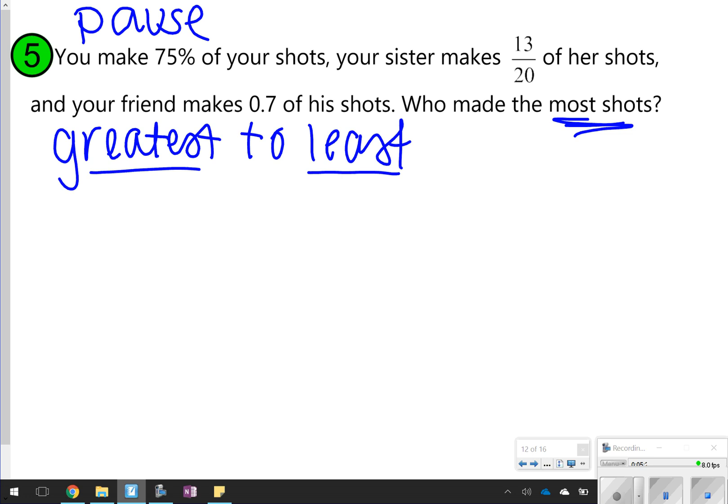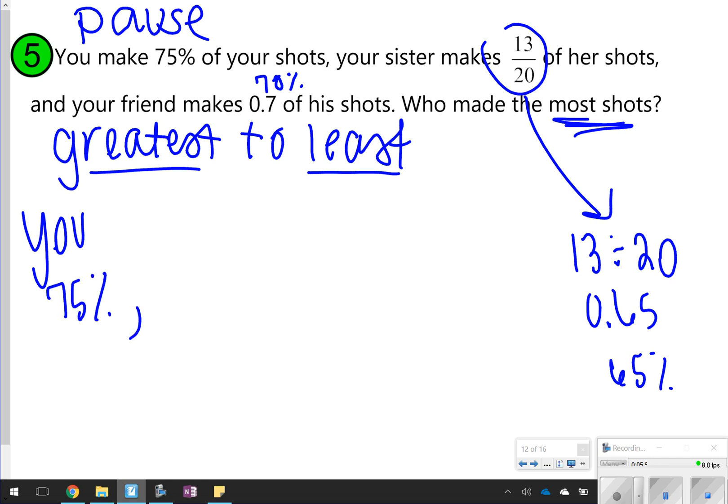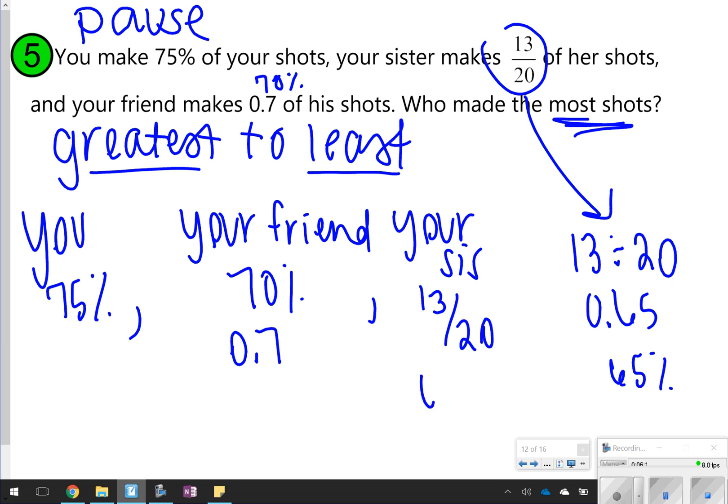All right, so it looks like you made 75% of your shots. Your friend can make 0.7 or 70% of their shots. 13/20, I'm not exactly sure, so I would just come down here and divide that one. 13 divided by 20 should give us, I think, 65. Yep, so 0.65 or 65%. So the greatest one looks like you. So greatest would be you at 75%, and then your friend at 70%, or 0.7, and then your sister, who made 13/20 of her shots for 65%. How'd you do?